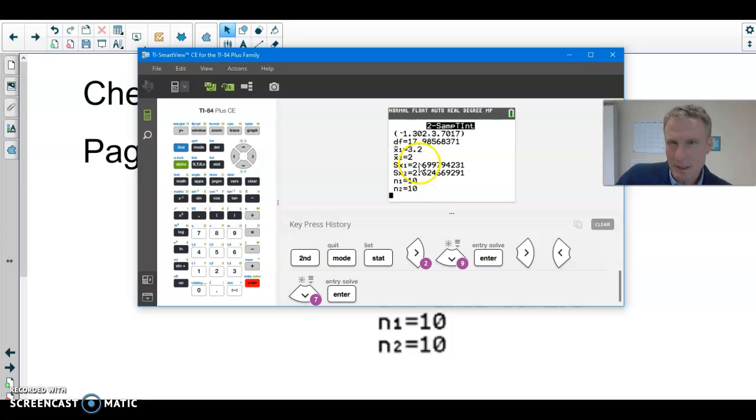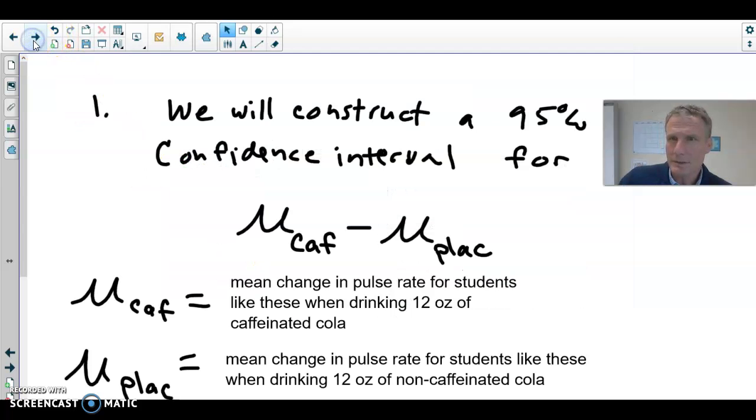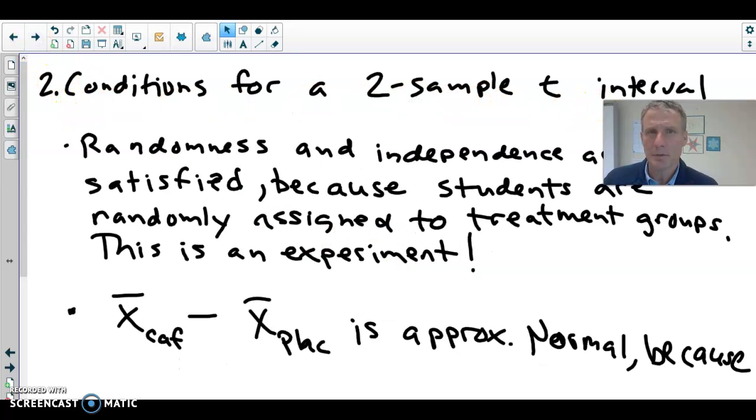So there's our sample means. There's our sample standard deviations. So we already have what we need to answer some questions. We already have the confidence interval. But you have to know how to write out the inference process in four steps. So step one, we'll construct a 95% confidence interval for mu with subscript CAF. That's for the caffeine group, those who've got the real caffeinated cola. That's the mean change in pulse rate, mean change in pulse rate for students like these students when drinking 12 ounces of caffeinated cola. But we're comparing that to those who had the non-caffeinated cola, we'll call that the placebo mean. That is what we would like to know. What is the true, what is the difference in the true means? The means, mean change in pulse rates.